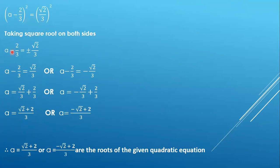This becomes a - 2/3 = ±√2/3. One will be +√2/3 and the other will be -√2/3 since we have plus and minus.